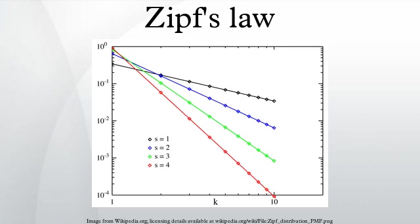Zipfian distributions can be obtained from Pareto distributions by an exchange of variables. The Zipf distribution is sometimes called the discrete Pareto distribution because it is analogous to the continuous Pareto distribution in the same way that the discrete Uniform distribution is analogous to the continuous Uniform distribution.